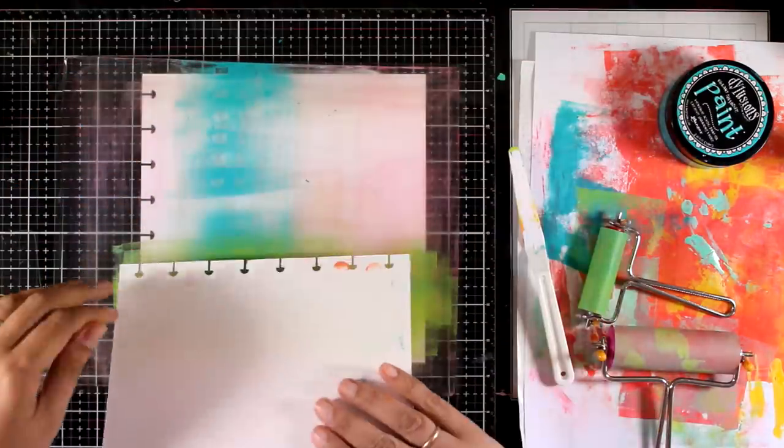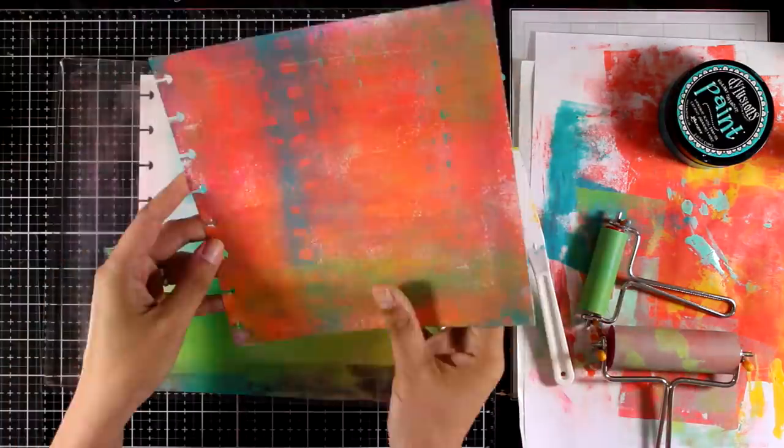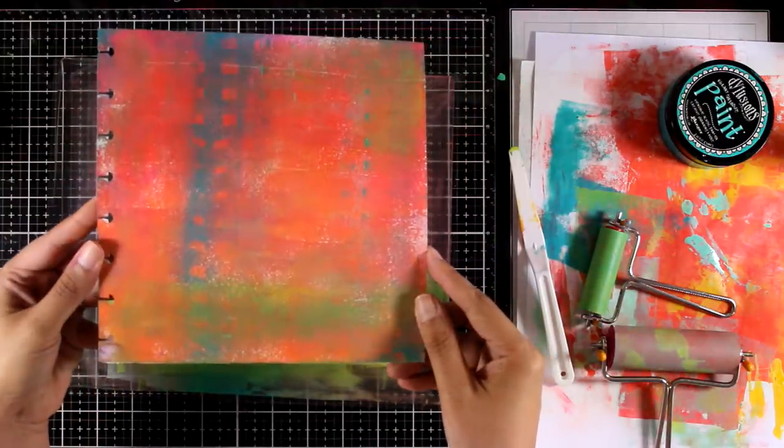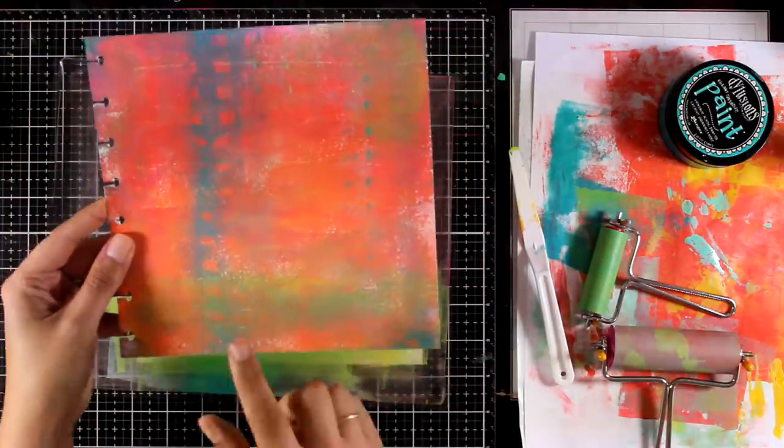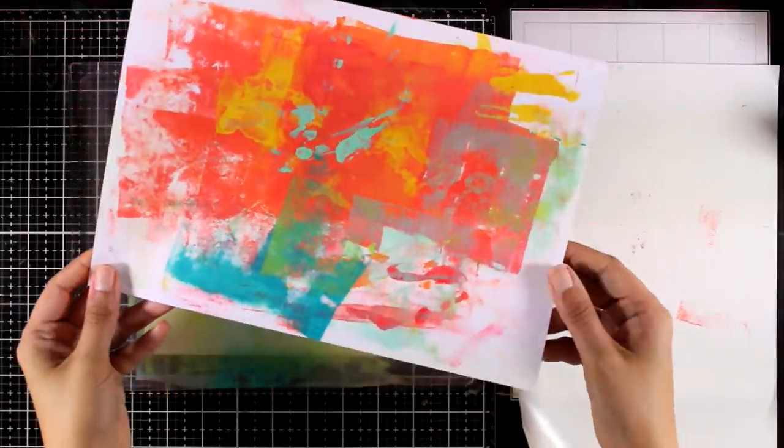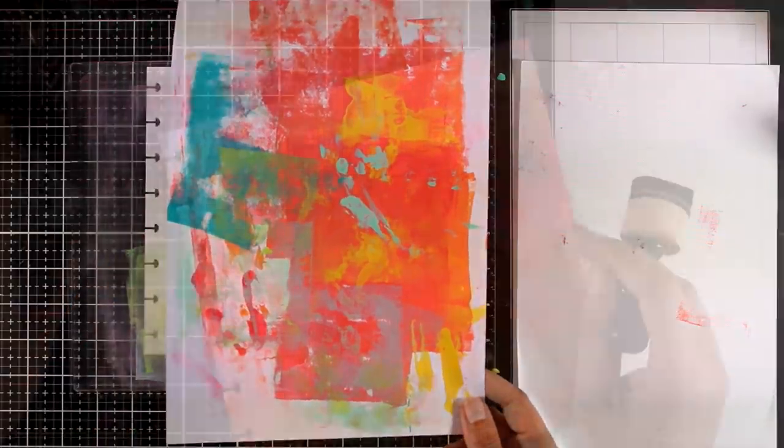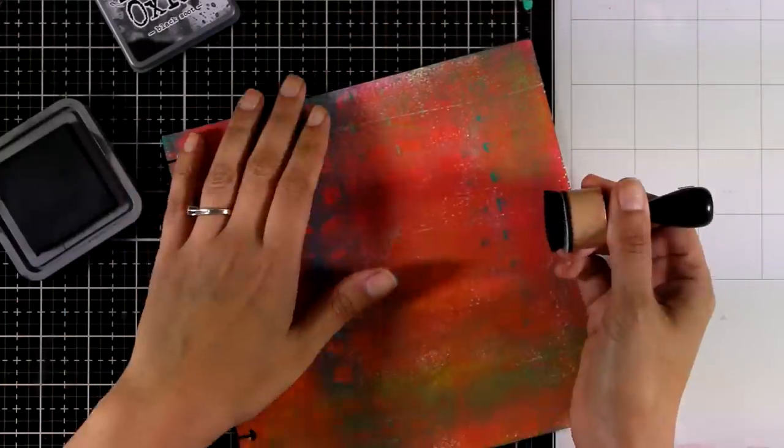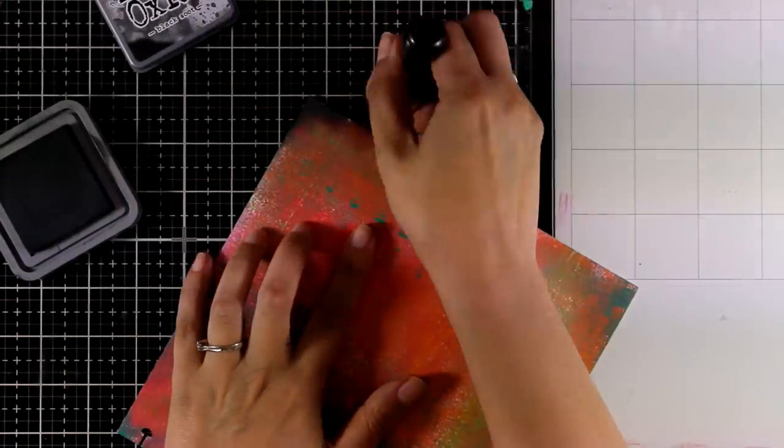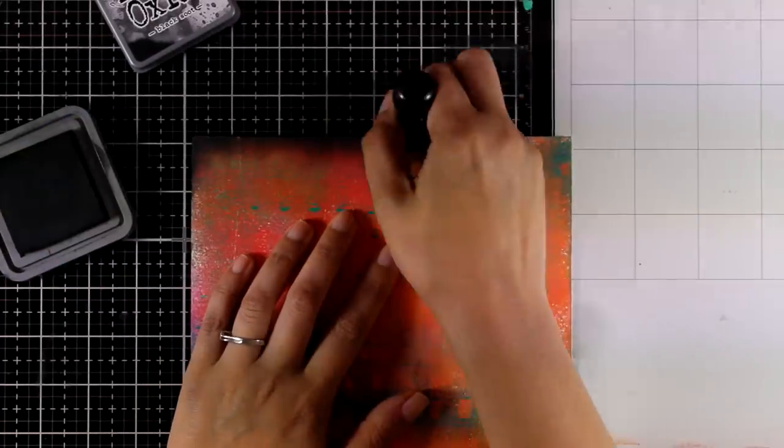So I'm working in different areas again adding a little bit of color and I'm going to call this background done when it comes to gel printing. Sometimes you get beautiful results on your scrap paper. This is the one that I was cleaning my brayer on.